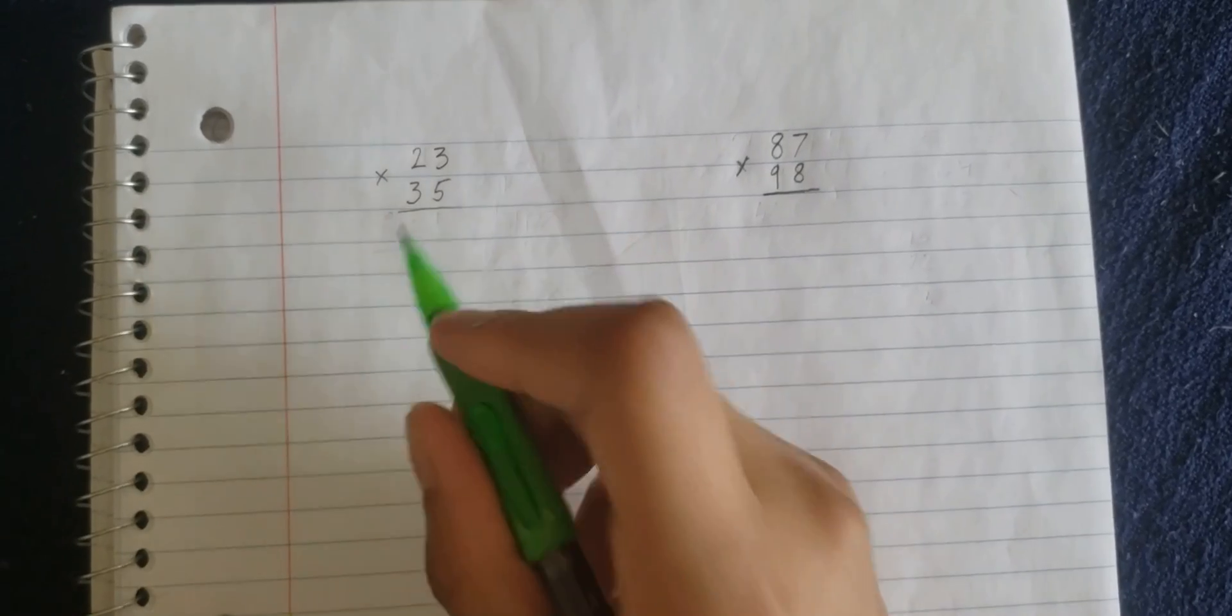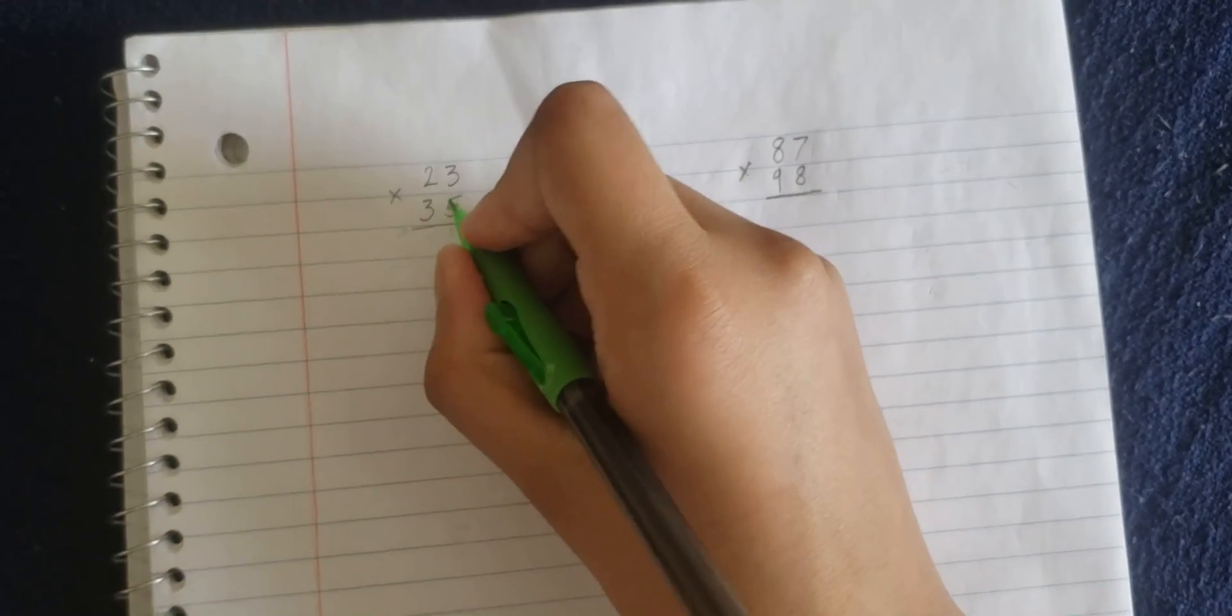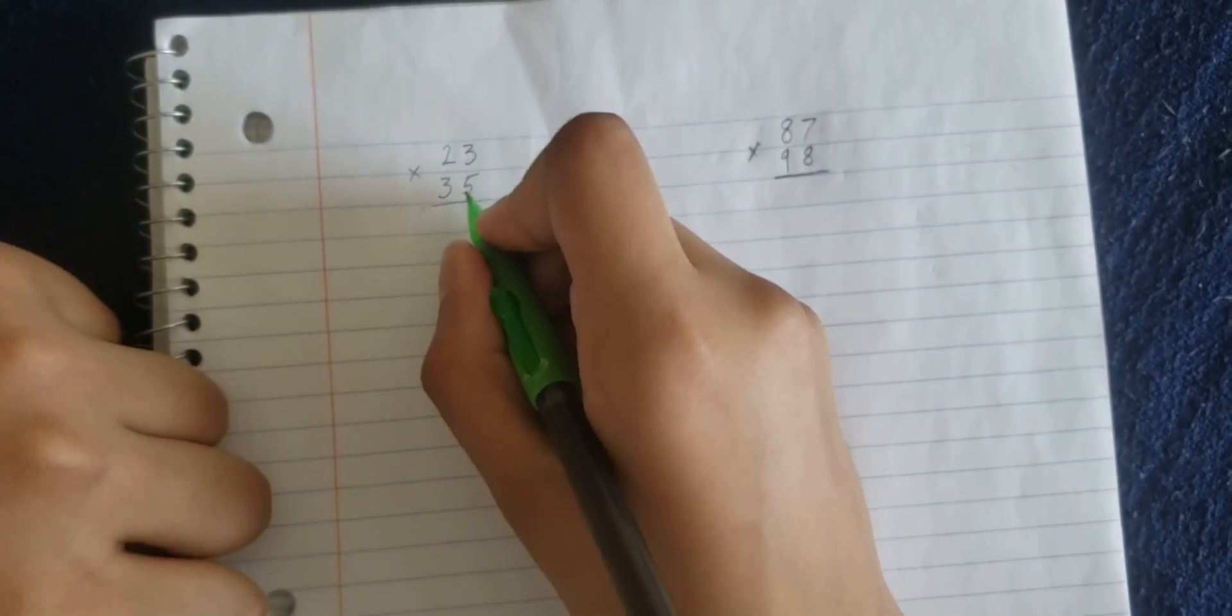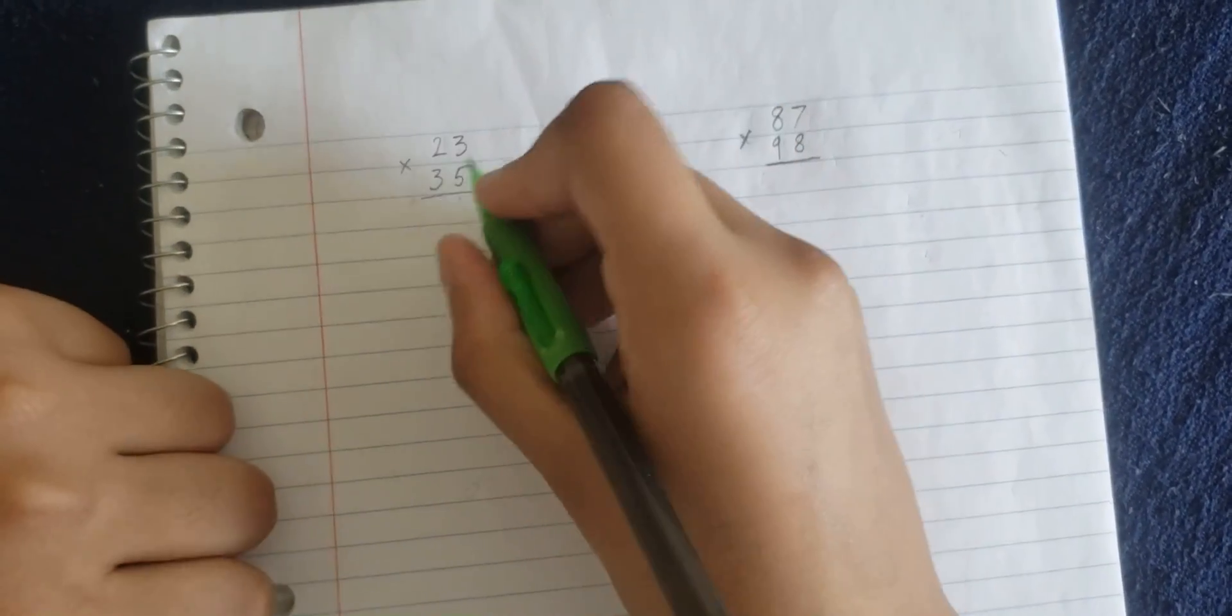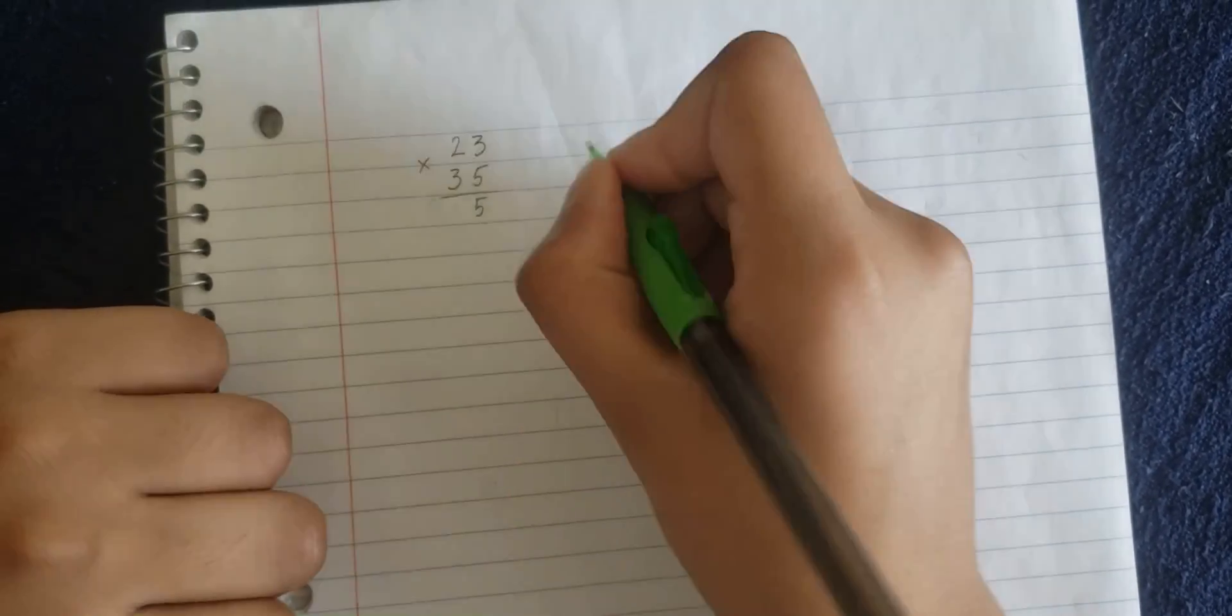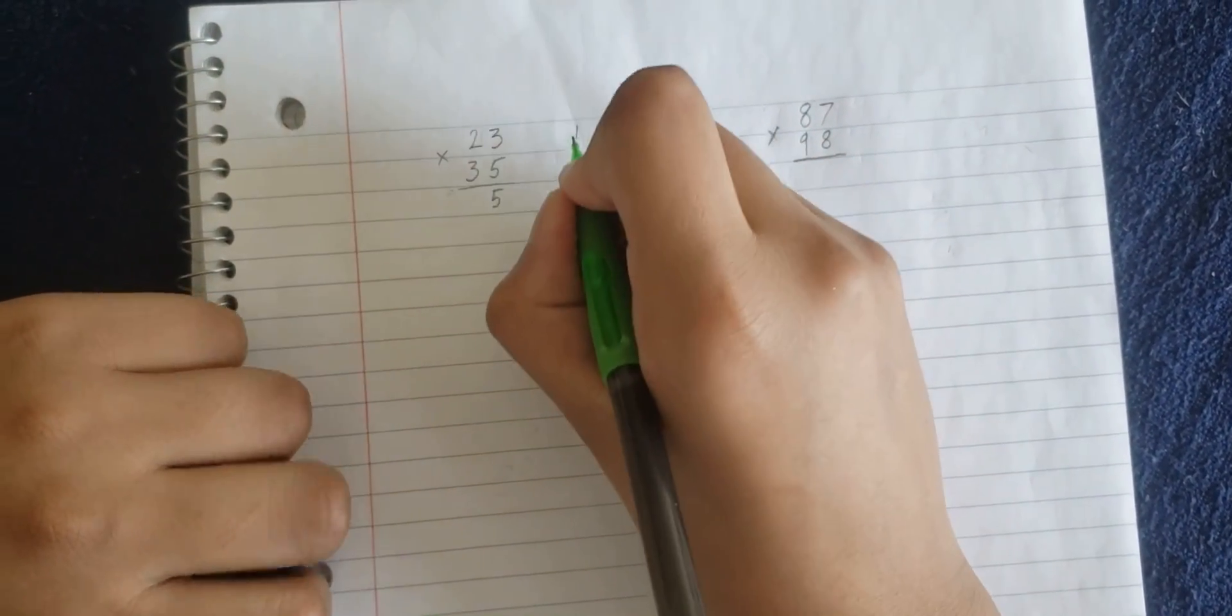I'll show you this one first. First step is to multiply three times five, or like the ones place first. Three times five is 15, so you write five here, of course, and then you could write one there.